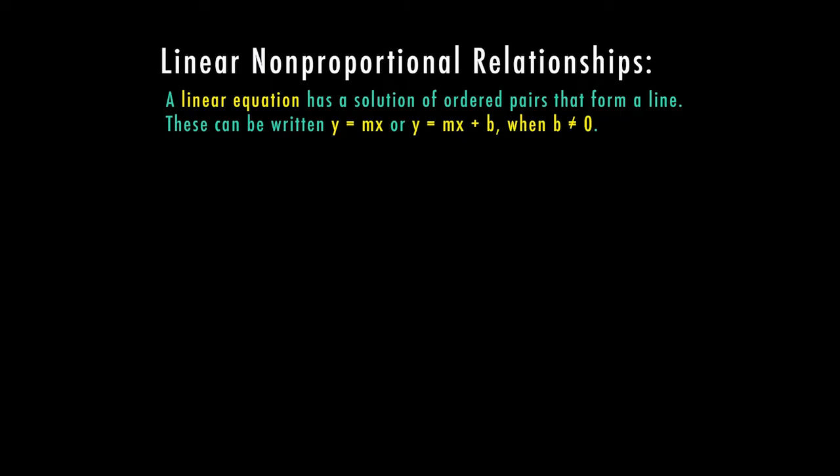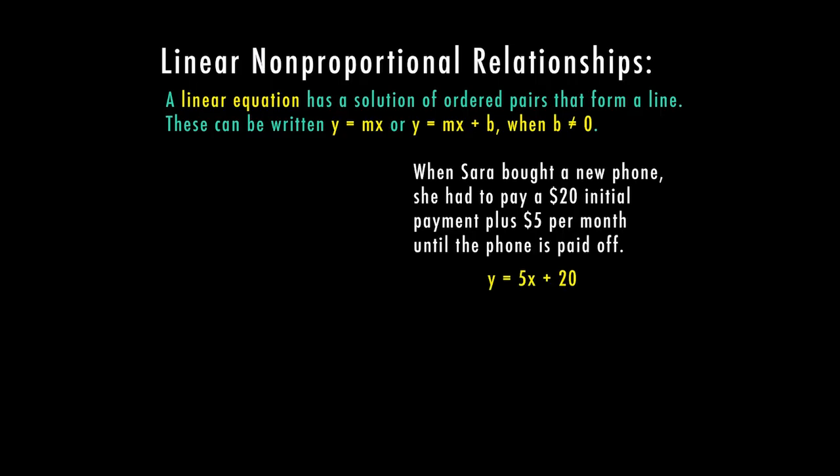Let's talk about when Sarah bought a new phone, she had to pay a $20 initial payment plus $5 per month until the phone is paid off. We have an equation here, y equals 5x plus 20. The $20 is what she had to pay at first, and then after that, she had to pay an additional $5 per month. Since she had to pay that every month, we would multiply that times our unknown, which is x, in order to figure out the price per month.